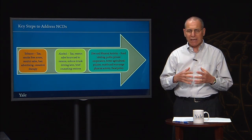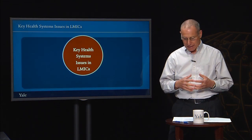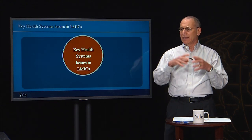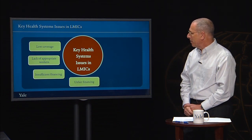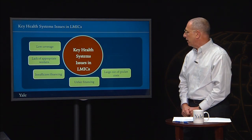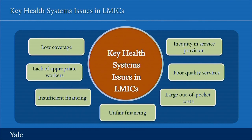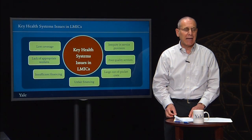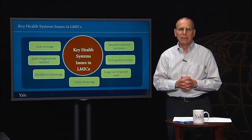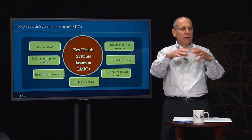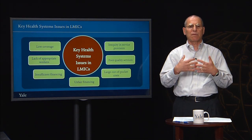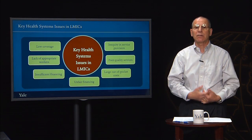Health systems are weak in many countries, and many countries have difficulty addressing what the World Health Organization calls health system building blocks. The result is often low coverage, a lack of appropriate workers, insufficient financing, unfair financing, large out-of-pocket costs, poor quality services, and inequity in service provision. Strengthening health systems to better serve the poor in fairer ways is not going to happen quickly in many countries. It's going to take time, and many countries will need to take a step-wise approach — picking up priority activities and making them work, then moving on to the next priority, until over time these countries have more effective, efficient, and fairer health systems that move ultimately to universal health coverage.